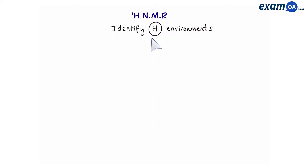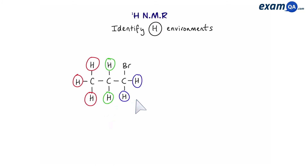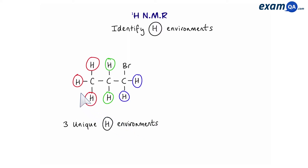The first skill is to be able to look at a molecule and identify proton or hydrogen environments. So let's start with this molecule. These three protons are in the same environment. These two are also in the same environment and these two also have the same environment, giving us three unique proton environments in total. All you have to do is look at protons and see if they're attached to the same thing. The three red protons are attached to the same carbon, and so are the two green ones and the two blue ones.